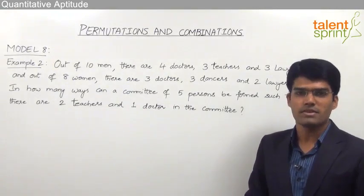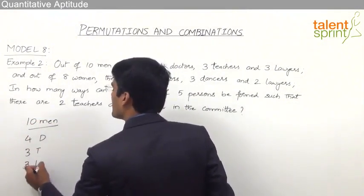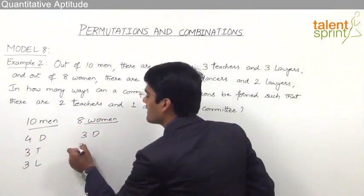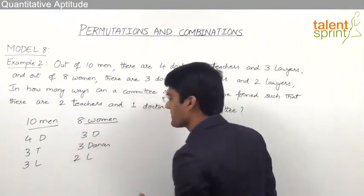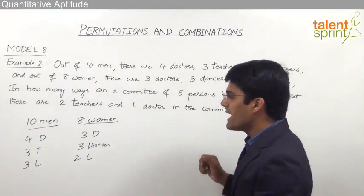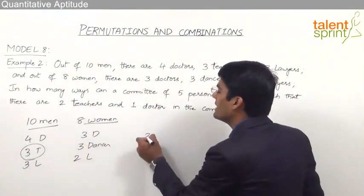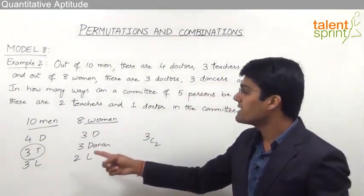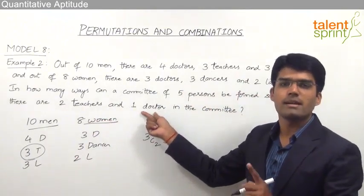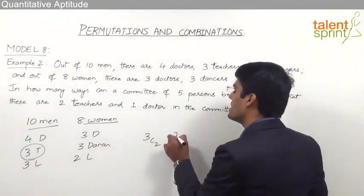We need to form a committee of 5 with 2 teachers and 1 doctor. There are total 3 teachers, all male, so 2 teachers out of 3 can be selected in 3C2 ways. Then we need 1 doctor — there are 7 doctors total (4 male and 3 female) and gender is not specified, so 1 doctor out of 7 can be selected in 7C1 ways.